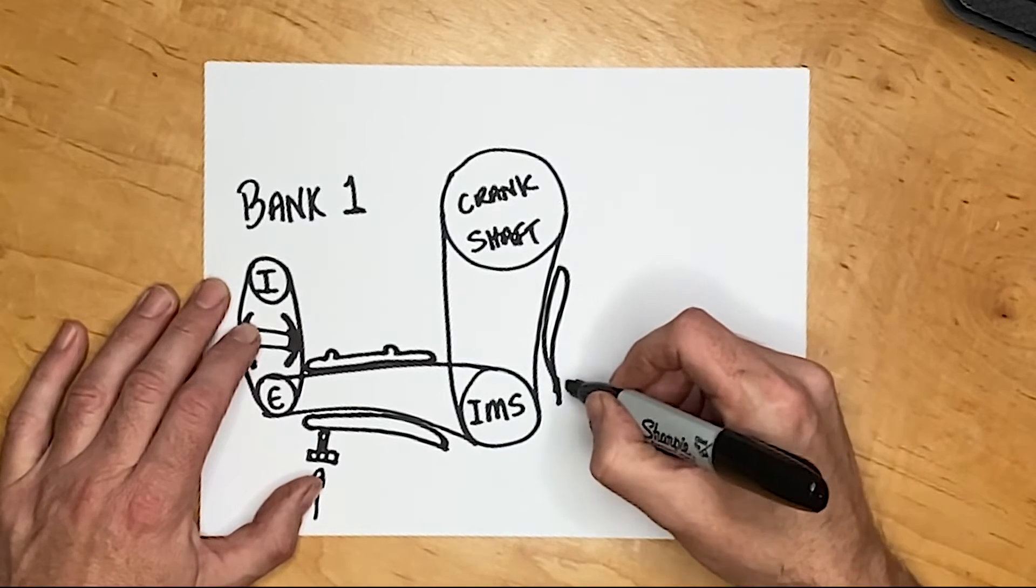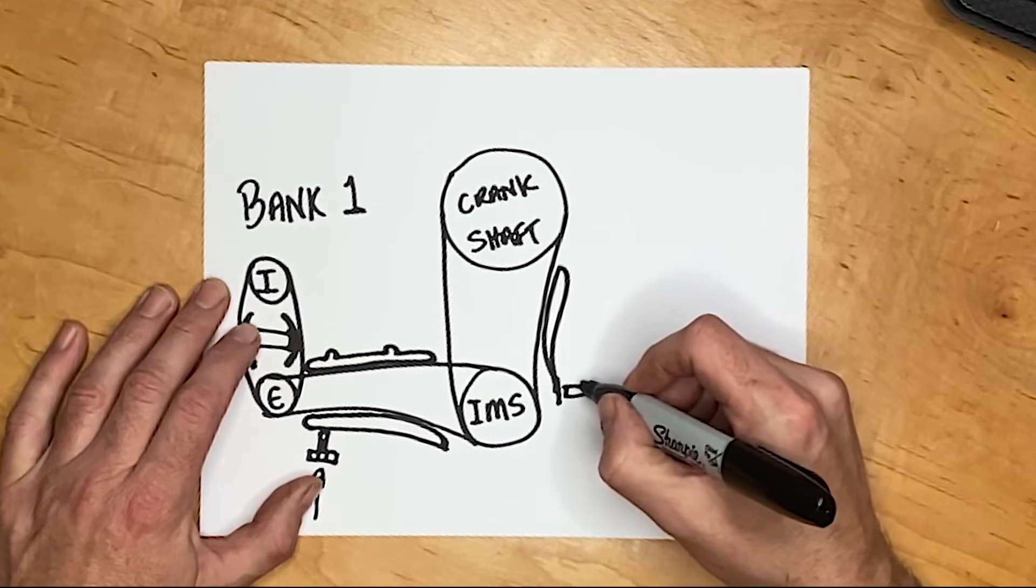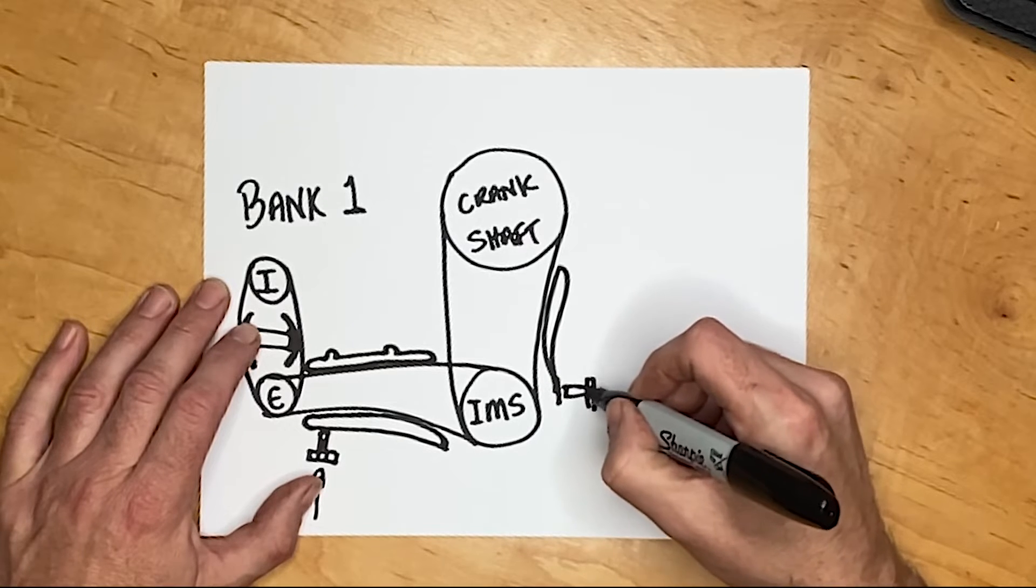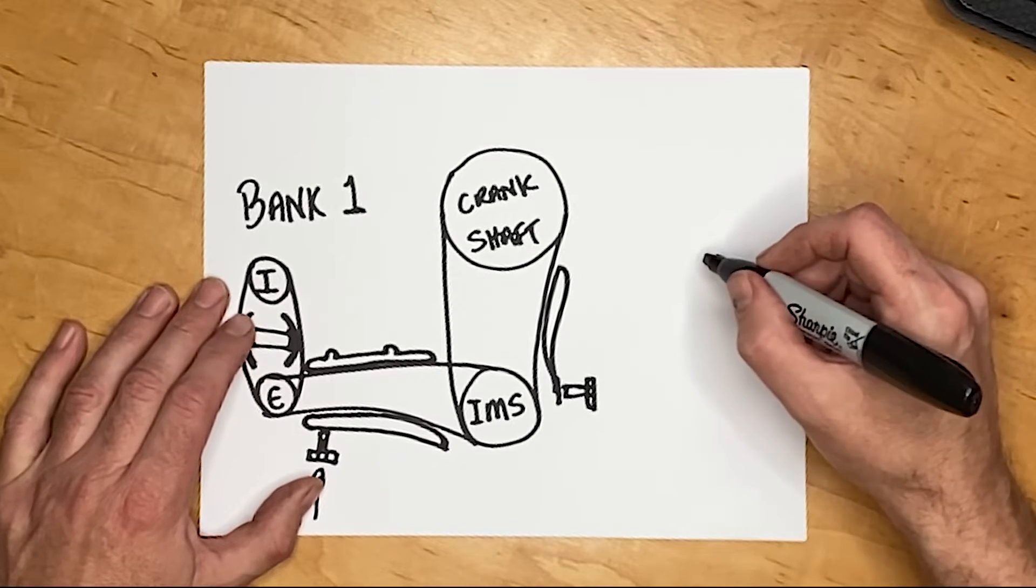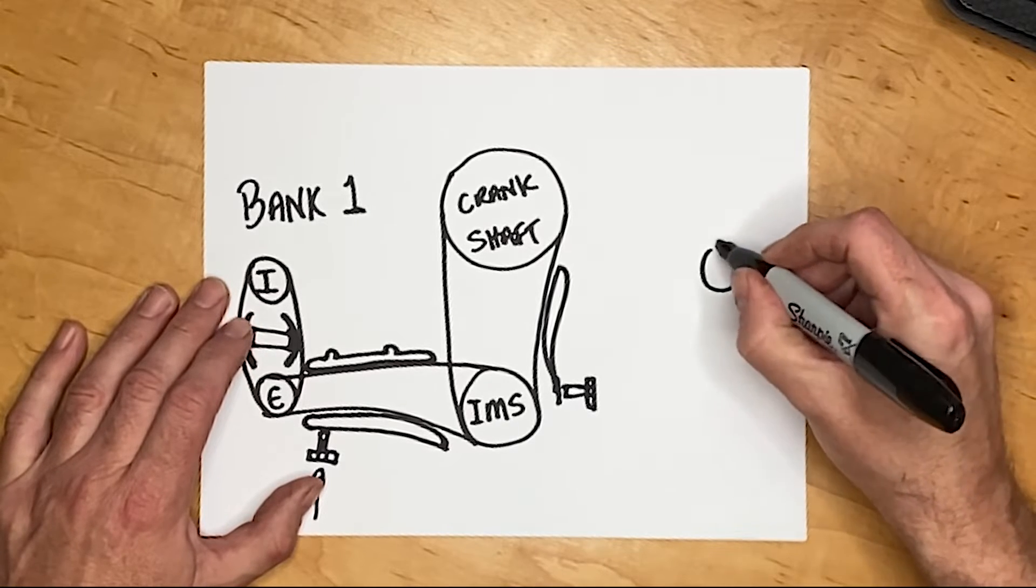Over here now we have the intermediate shaft chain rail and tensioner. Same sort of thing, same sort of reason as all the other chains. We'll come to that later on.